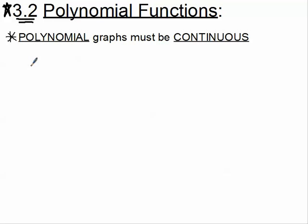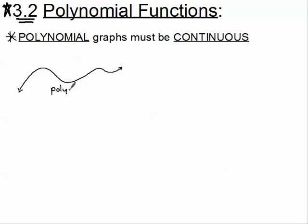Polynomial function graphs must be continuous. Without getting into the exact definition of continuity, basically that means the graph has to be a nice, smooth curve — going up, down, with nice hills and valleys. This is a polynomial.